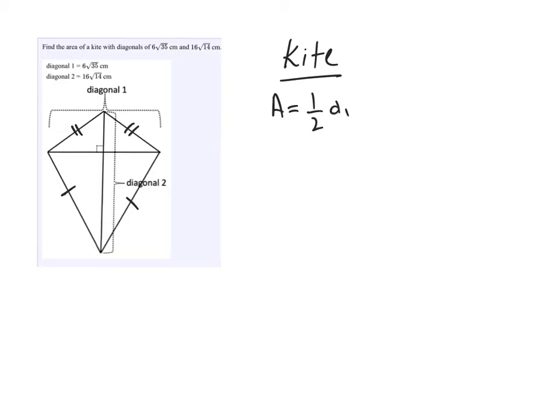The area of a rhombus or a kite is one-half d1 times d2. You multiply the two diagonals and then you take half of that.